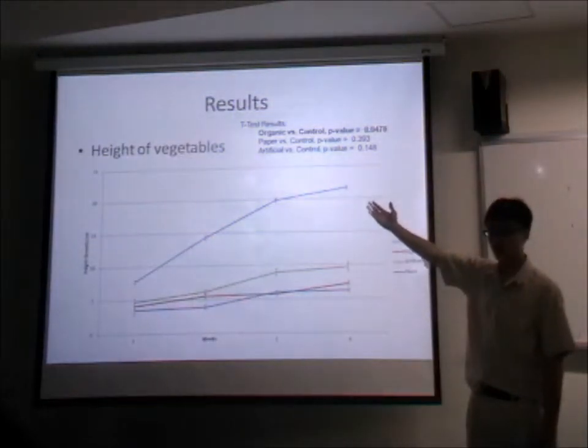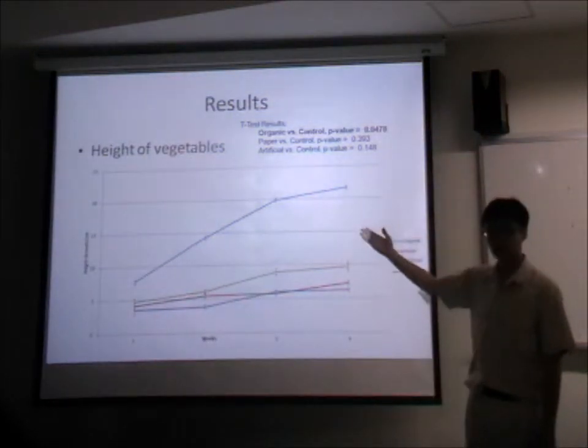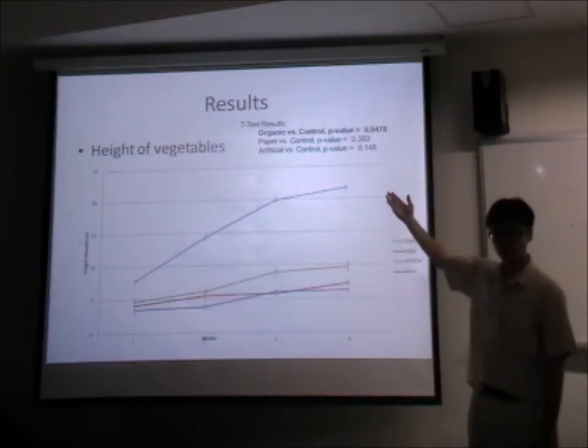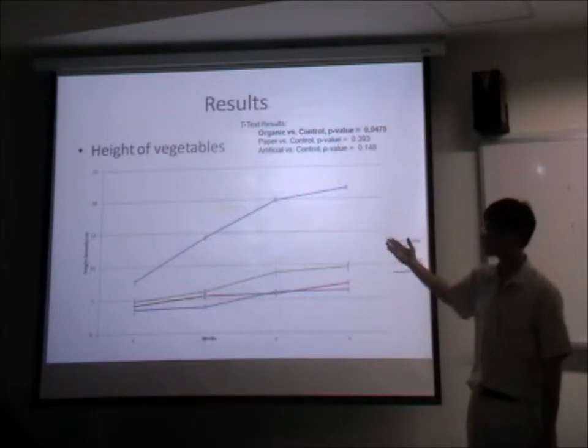Here is the graph showing the height of our vegetables. The height of the plants fertilized with vermicompost from organic waste is much higher than the rest. The t-test results comparing the organic and paper setups against the control are statistically significant.